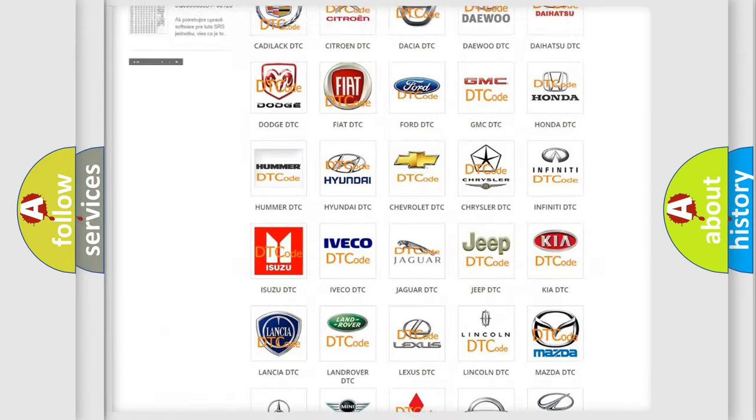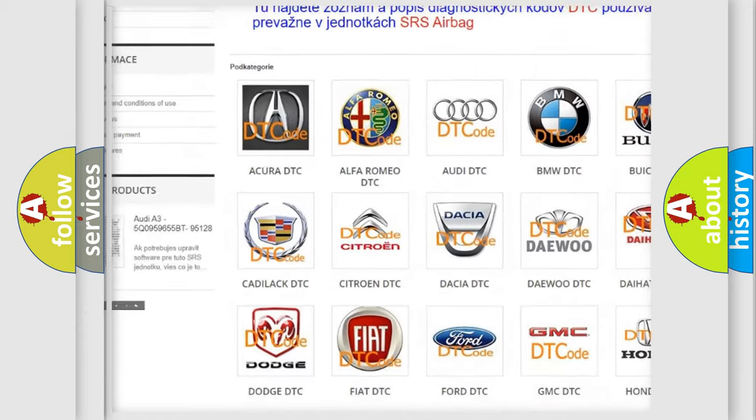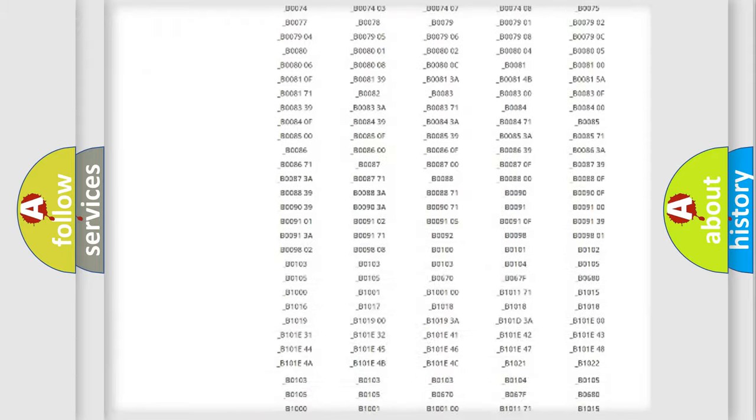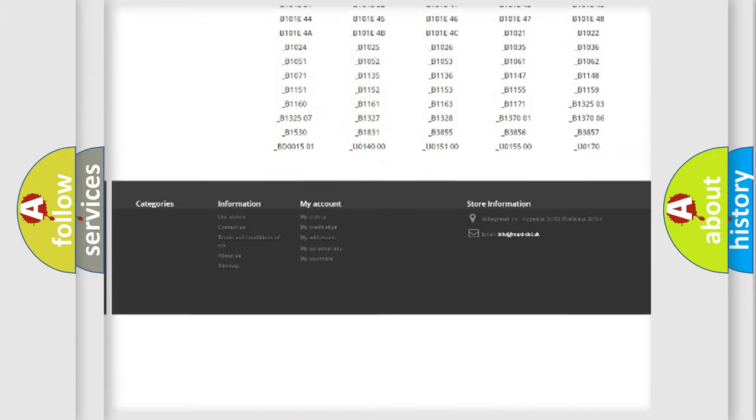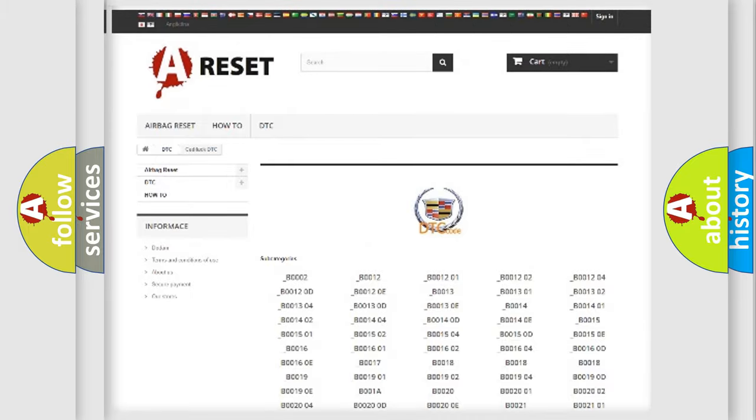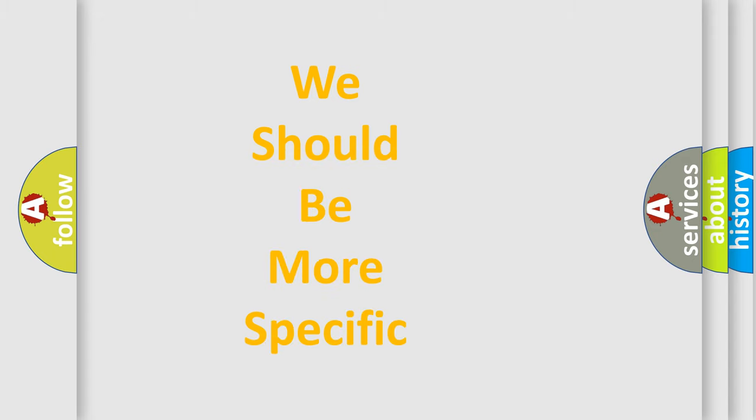Our website airbagreset.sk produces useful videos for you. You do not have to go through the OBD-II protocol anymore to know how to troubleshoot any car breakdown. You will find all the diagnostic codes that can be diagnosed in Cadillac vehicles, and also many other useful things. The following demonstration will help you look into the world of software for car control units.